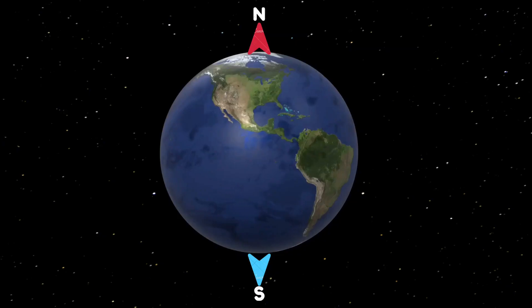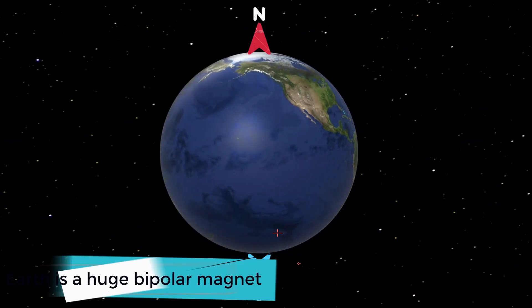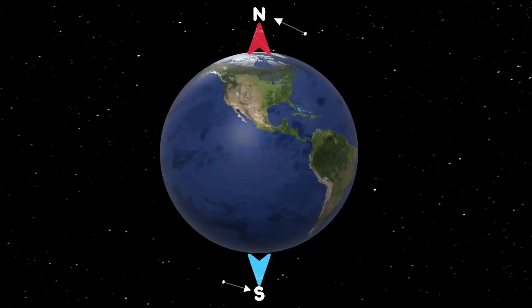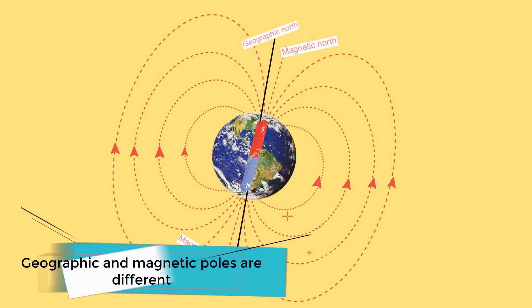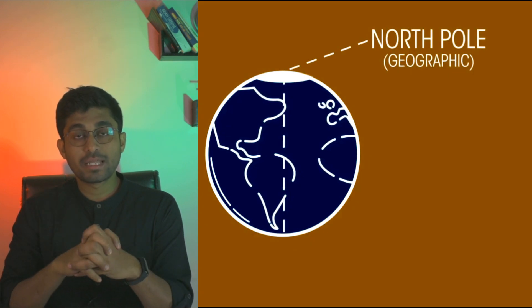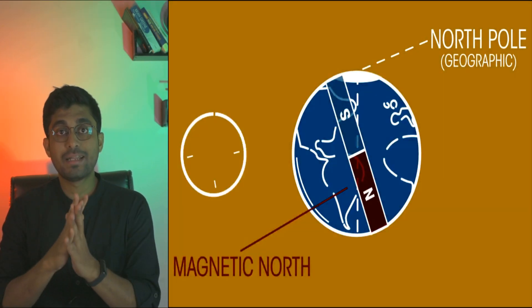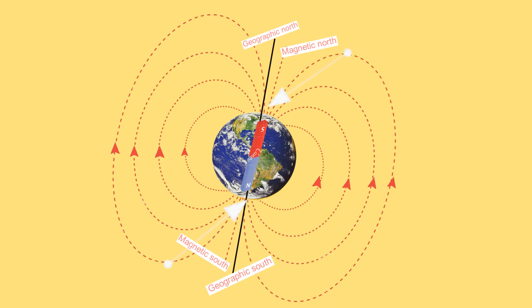Earth acts as a huge bipolar magnetic field. 99% of the Earth's magnetic field in nature is bipolar. This bipolar nature is due to the north pole and south pole. The geographic north pole and south pole are different from the magnetic poles — they are not coinciding with each other. The magnetic pole and geographic pole make a small angle between each other.